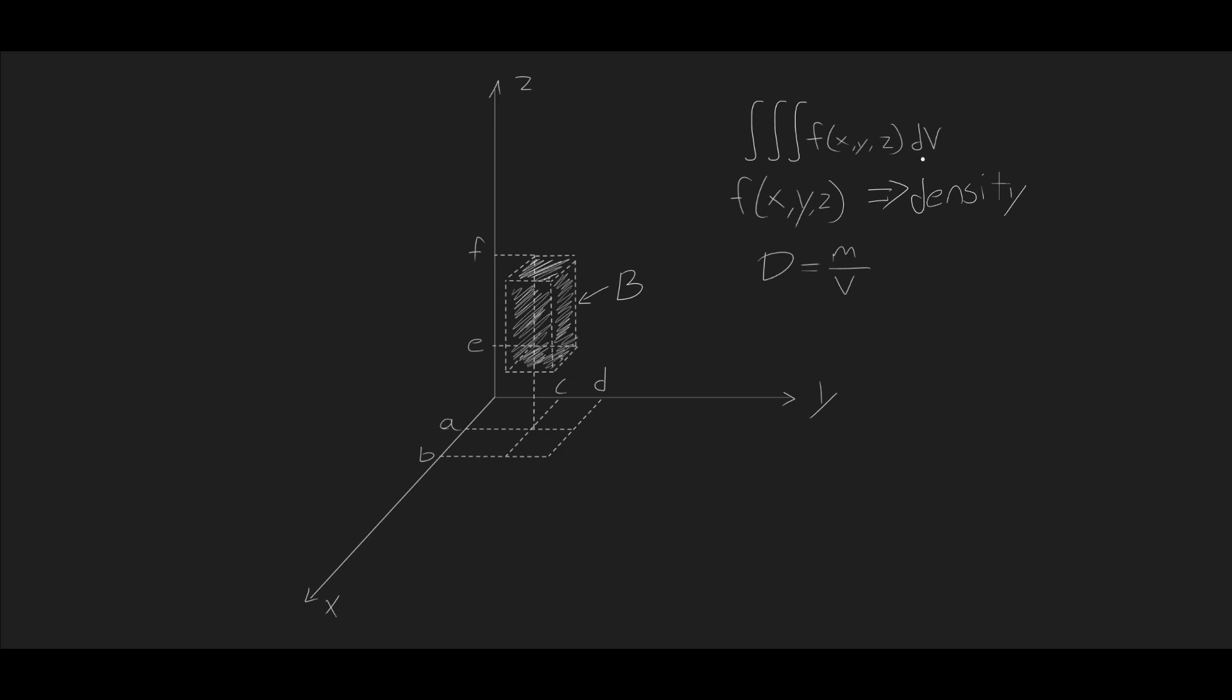The density, m over v, times dv, will give us a small mass, dm. And when we take the triple integral, we're going to add up all of these small masses, and that will give us the mass of the object.